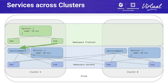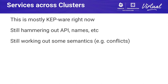As a more advanced example, the backend service might exist across multiple clusters — you might have a service export and import that aggregates service backends from both cluster A and cluster B. If you access the cluster set IP, you will access backends from all of these. Services across clusters is mostly KEP-ware right now, but people are busy hammering out the implementation, API, and names, and there are still challenges around conflicting configurations between linked clusters.